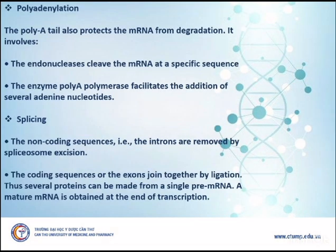Polyadenylation: The poly-A tail also protects the mRNA from degradation. It involves endonucleases cleaving the mRNA at a specific sequence, and the enzyme poly-A polymerase facilitates the addition of several adenine nucleotides. Splicing: The non-coding sequences, i.e., the introns, are removed by spliceosome excision. The coding sequences, or exons, join together by ligation. Thus, several proteins can be made from a single pre-mRNA, and a mature mRNA is obtained at the end of transcription.